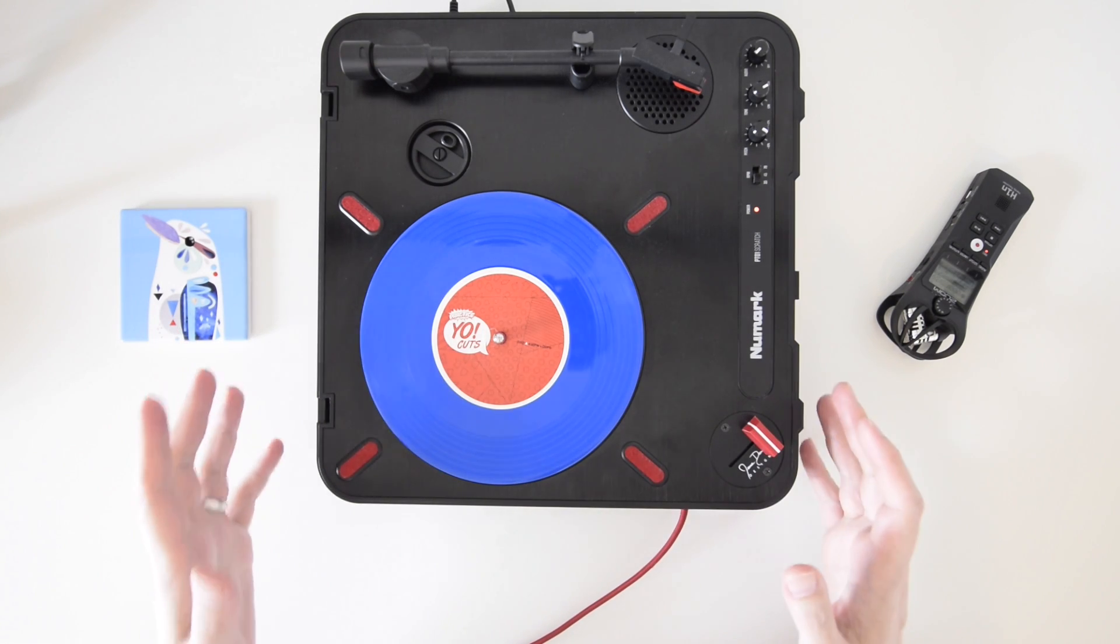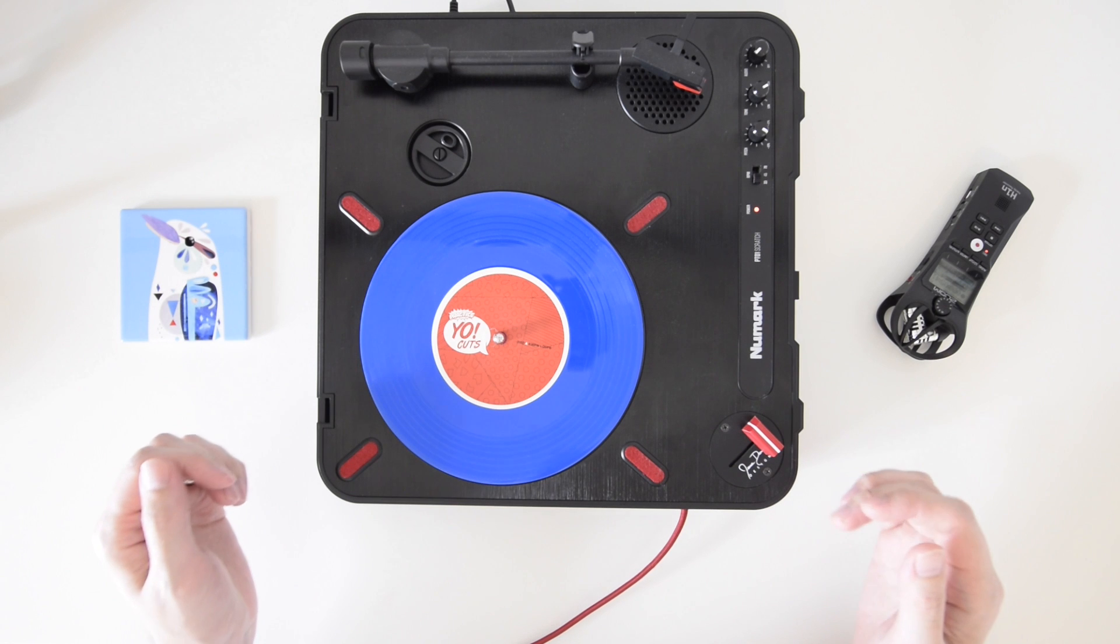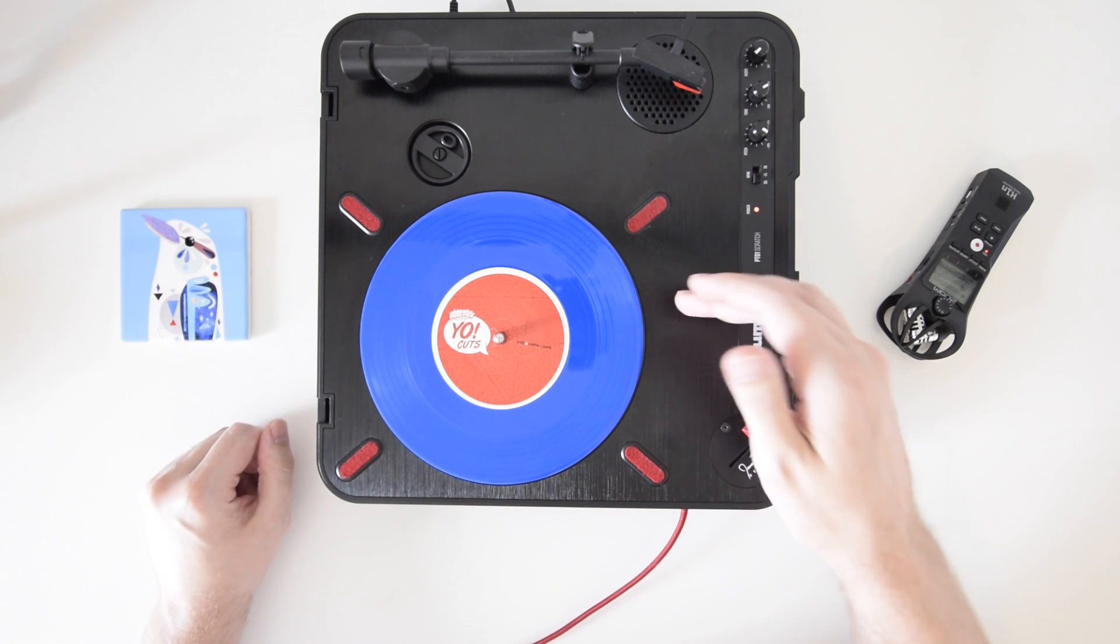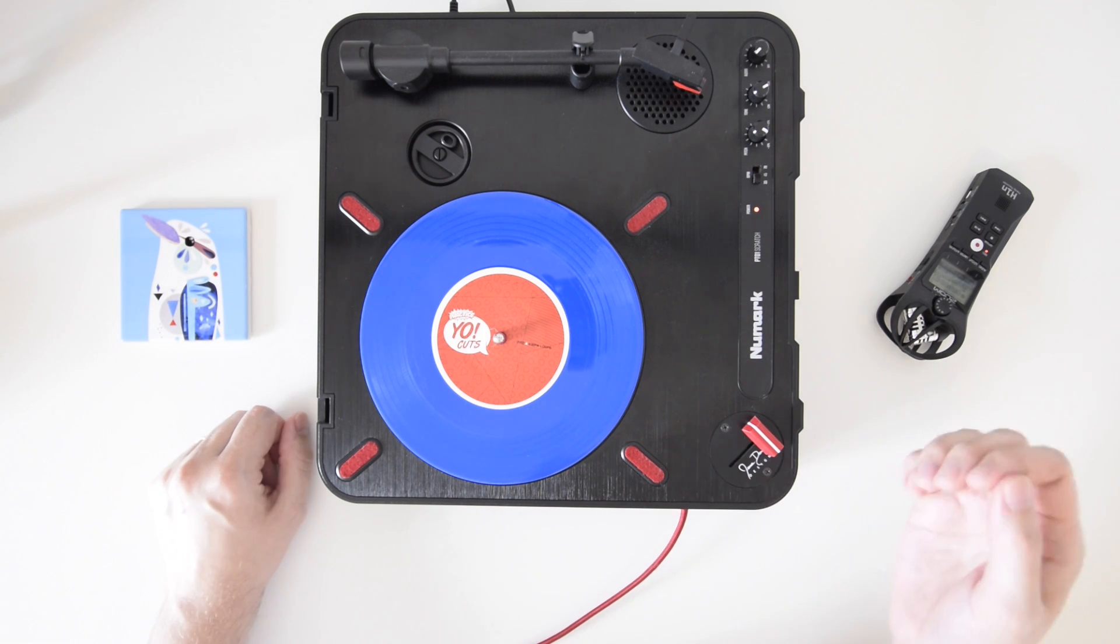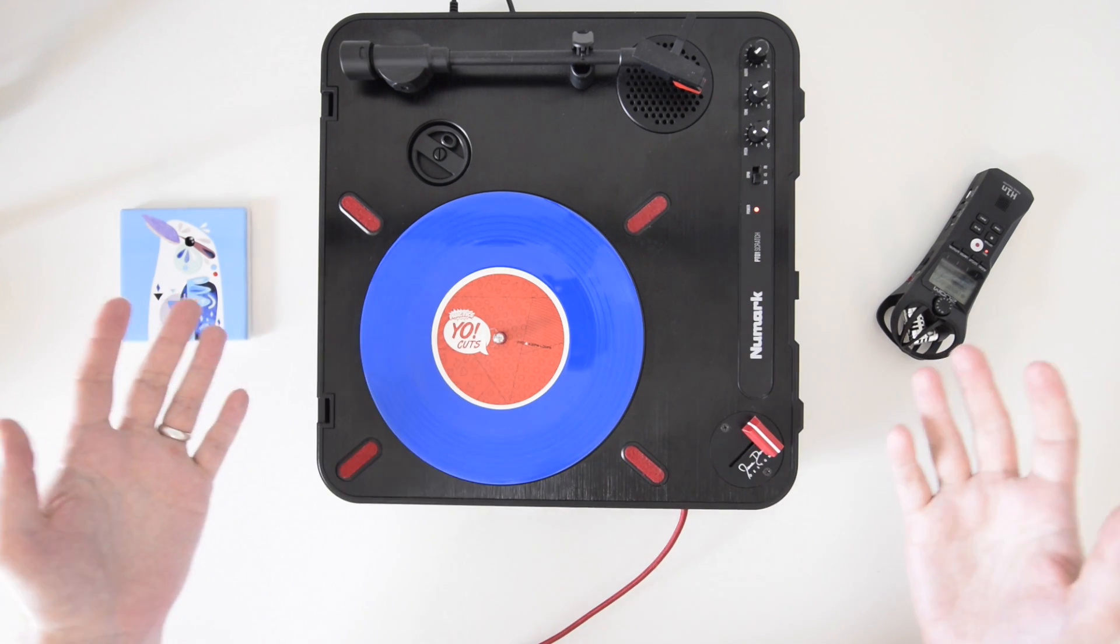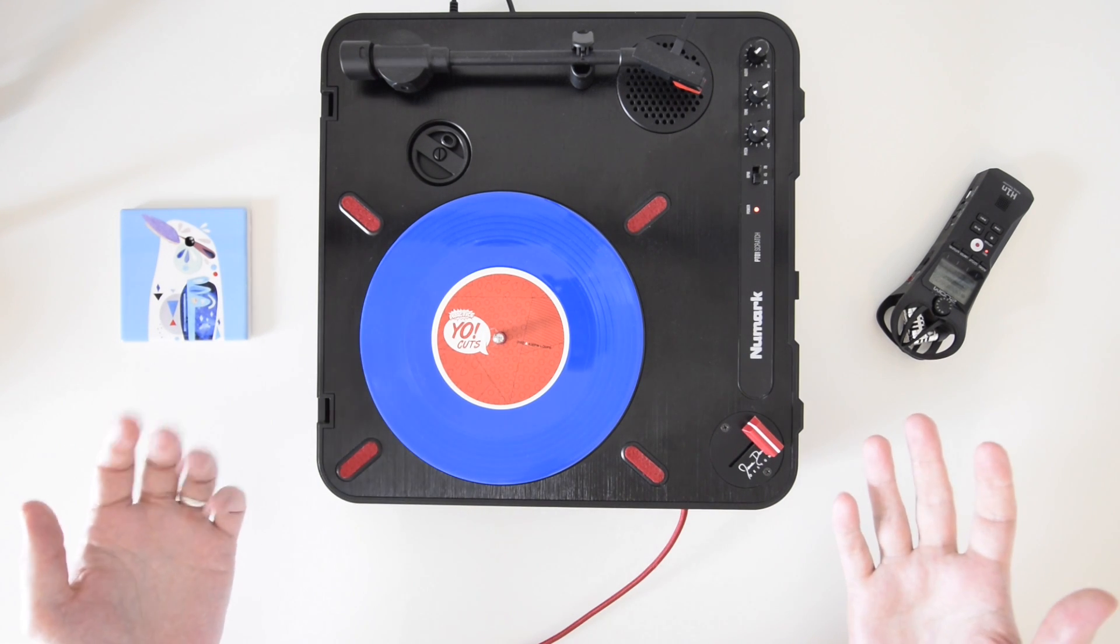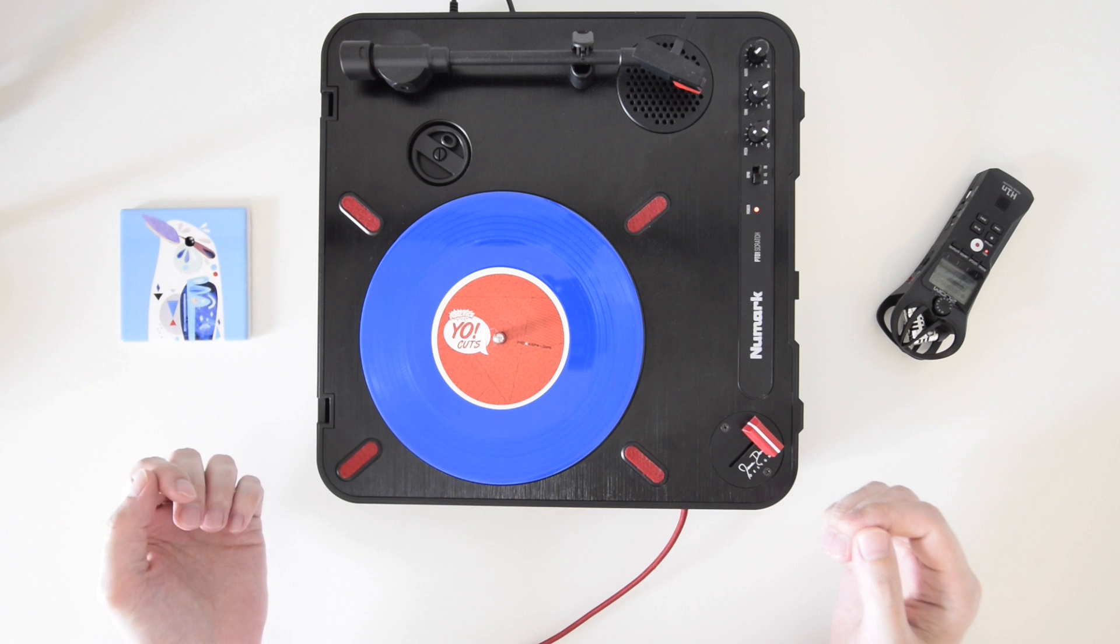Now there are a bunch of different options when it comes to platter stabilization. There are a few companies that make the ring style that I use but also there are products that will completely replace the stock platter, upgrading it to a metal platter. All of these options are of course different prices and it's up to you which one you would go ahead and get but I would definitely recommend getting something.